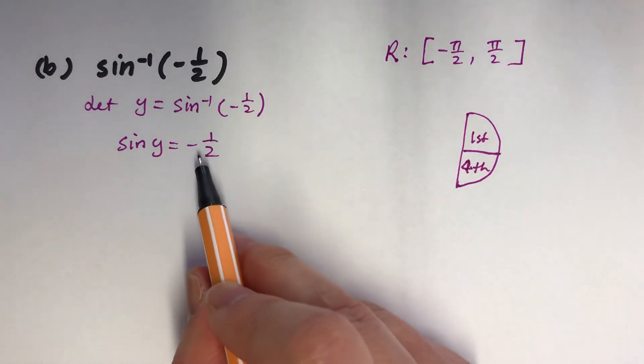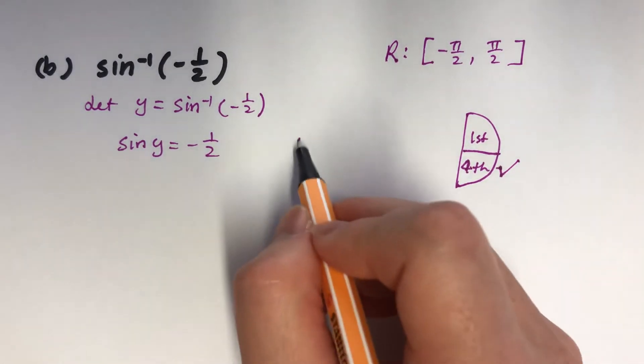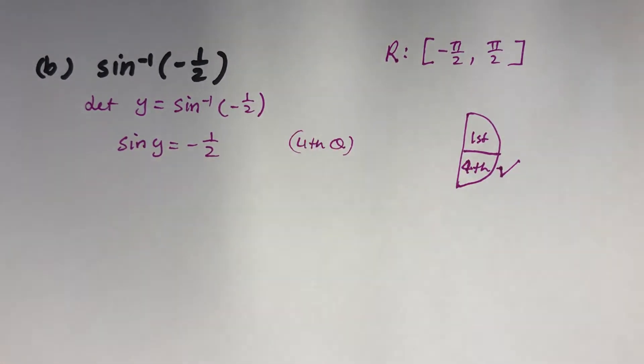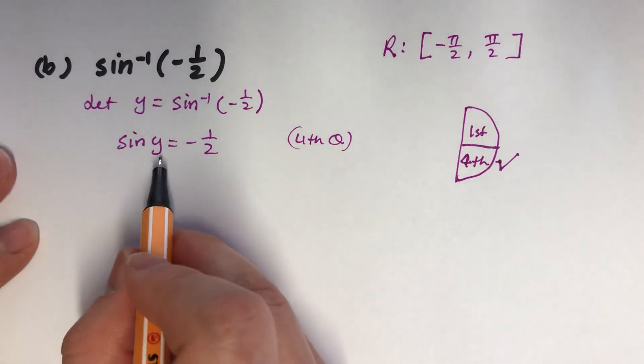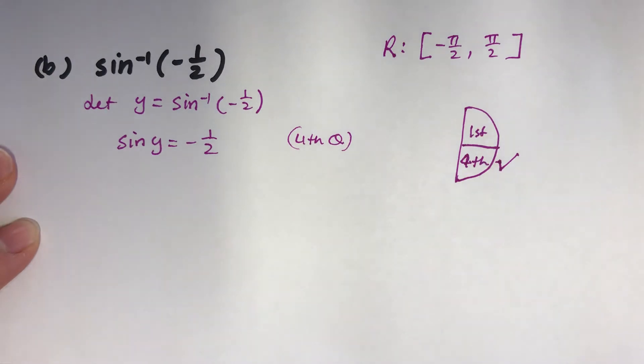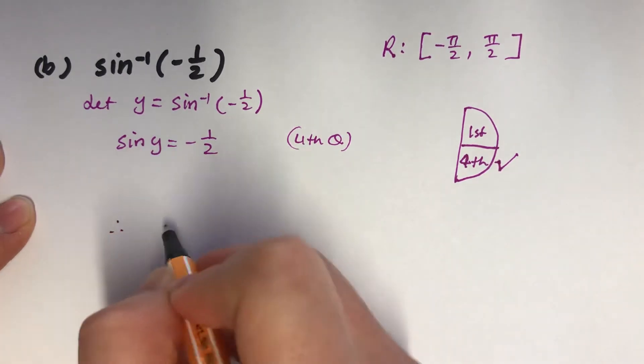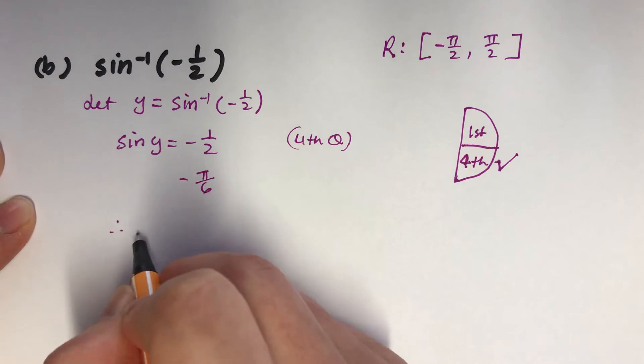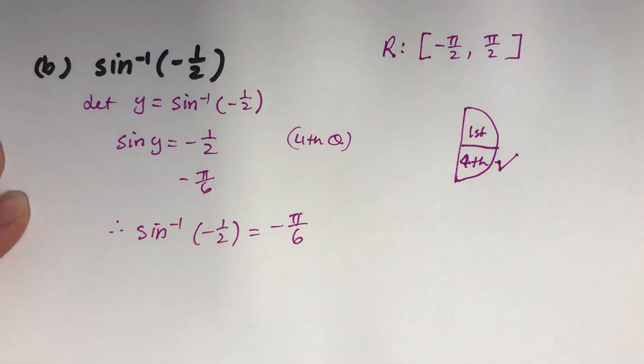But this time, it's a negative value. So it's going to be 4th quadrant. So 4th quadrant is just a negative acute angle. Which angle gives just half to start with? It'll be 30 degrees, which is pi over 6. But it's negative, so it's going to be negative pi over 6. So inverse sine minus half is negative pi over 6. That wasn't too bad. Next one.